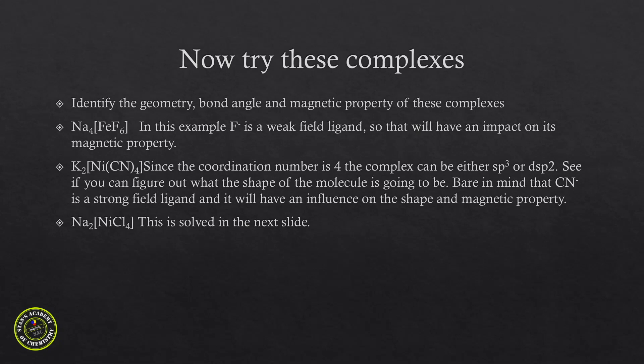Here are a few examples for you to practice. The first is Na4FeF6, very similar to K4Fe(CN)6, with the difference that CN⁻ is replaced by F⁻, which is a weak field ligand — watch out for spin pairing or the lack of it. Also K2NiCN4, where you have a strong field ligand. I am going to work out Na2NiCl4 to show how we can apply the same concepts.